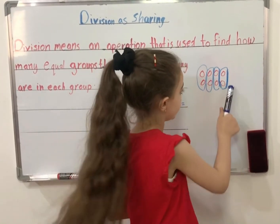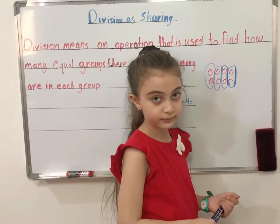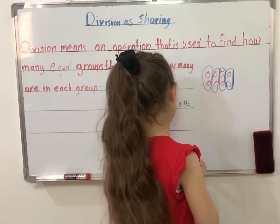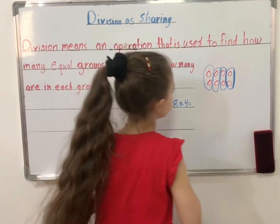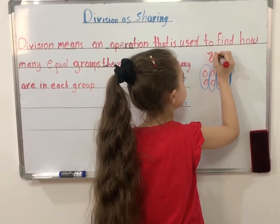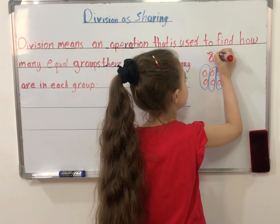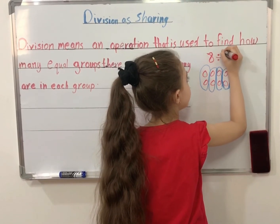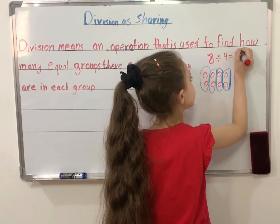2 plus 2 plus 2 plus 2. So, 8 divided by 4 equals 2.